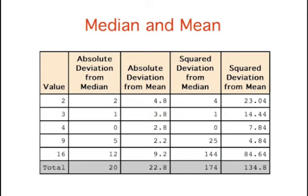By looking at the last row, you can see that the sum of absolute deviations from the median is smaller than the sum of absolute deviations from the mean. This will always be the case since the median minimizes the sum of absolute deviations. On the other hand, the sum of squared deviations from the median is larger than the sum of squared deviations from the mean. This is the case because the mean minimizes the sum of squared deviations.